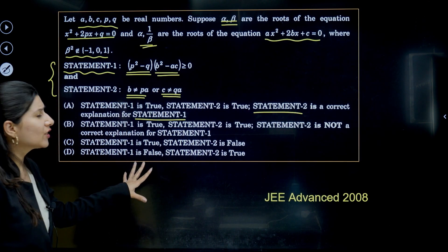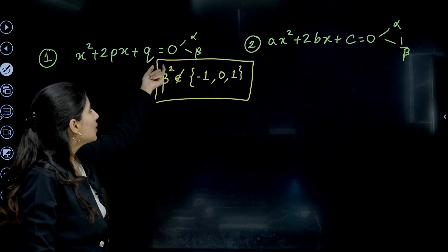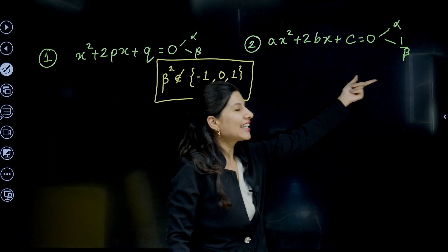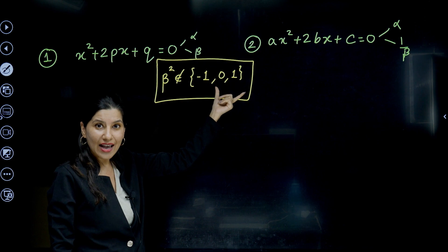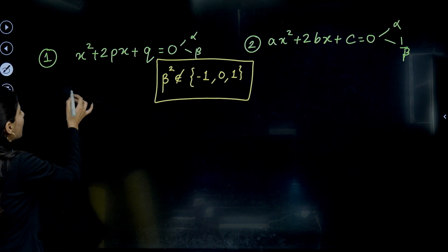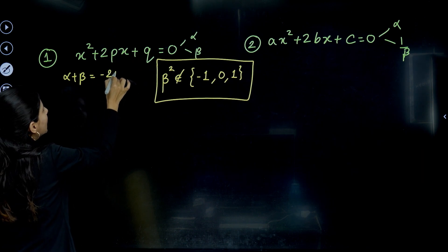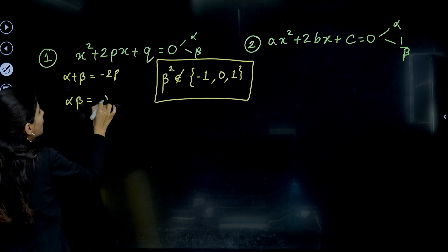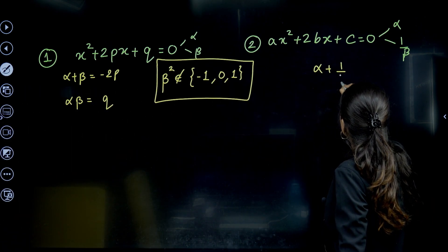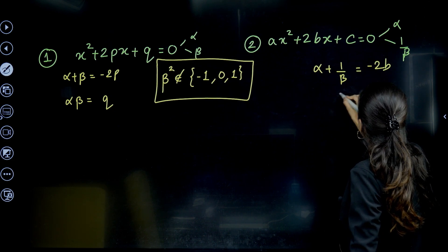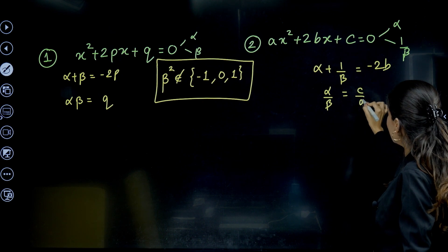Let me write all the given information. From the first quadratic equation with roots alpha and beta: alpha + beta = −2P and alpha·beta = Q. From the second equation with roots alpha and 1/beta: alpha + 1/beta = −2B/A, and alpha/beta = C/A.